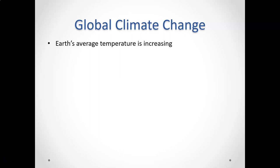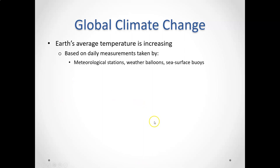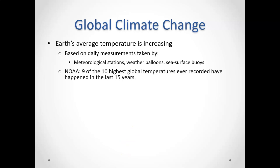Earth's average temperature is continuing to increase at a fairly steady rate, year by year. We know this through a whole host of meteorological stations, weather balloons, sea surface buoys, and more around the world — all the data tells us that the Earth's global average temperature continues to increase. Nine of the ten highest global temperatures ever recorded have happened in the last 15 years, and at the end of 2019 there was a new record average temperature for planet Earth.